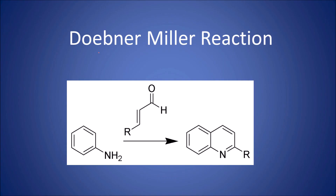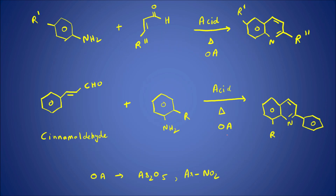Good evening to all of you. Today we are going to talk about the Doebner-Miller reaction. This reaction in particular is used to make quinolines. This is the scaffold for quinolines — this is a quinoline, and this is a derivative of quinoline where we have an R group. What we are using here is an alpha-beta unsaturated aldehyde along with anilines, and with this we can get quinoline.